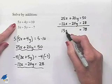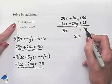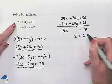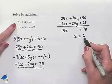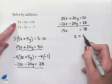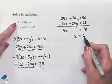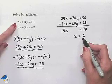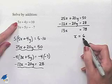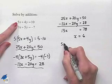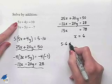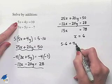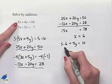solve for x. 13x divided by 13 is x, 78 divided by 13 is 6. Now we're going to back substitute. We'll take our value of x = 6 and substitute into one of the equations. Let's just go to the first equation. We're going to have 5(6) + 4y = 10. This will give us